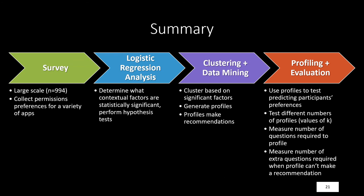Our work can be summarized as follows. First, we ran a large-scale survey on Amazon Mechanical Turk, collecting permissions preferences for a wide variety of apps across all Google Play Store categories from 994 users in the United States. Next, we performed logistic regression analysis and hypothesis testing to determine which contextual factors were statistically significant. We then performed clustering and data mining on the resulting corpus, clustering based on significant factors to generate profiles that make recommendations for permissions users would likely use.